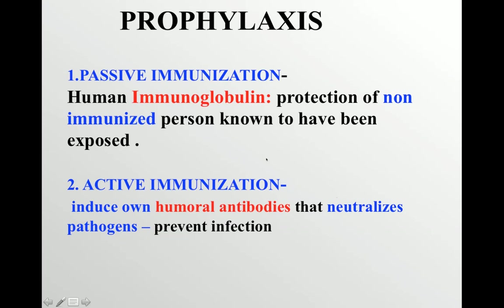Passive immunization is when an unimmunized person is exposed to a disease and immunoglobulins are injected to give protection for a short period until the patient starts producing their own immunoglobulins. Active immunization is when the person starts producing their own humoral antibodies to neutralize the pathogen — for example, hepatitis B surface antigen given as an active immunization agent to protect against hepatitis B viral infection.